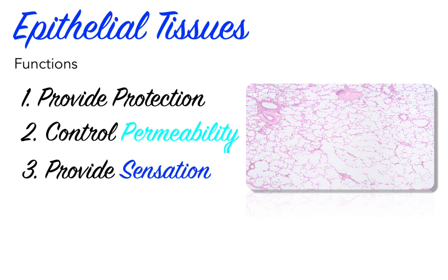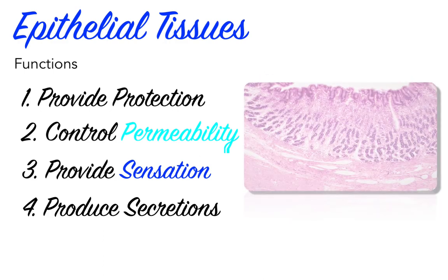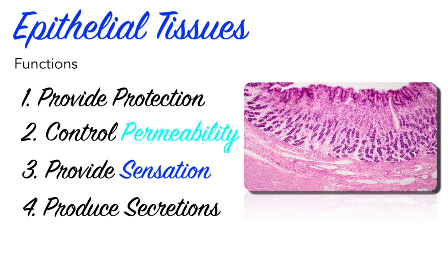Third, epithelial tissues provide sensation. Not only do some nerve endings penetrate into epithelial tissues, but epithelial tissue also contains specialized cells that can detect changes in the environment and relay information to the nervous system. For example, touch receptors in the deepest layers of the skin's epithelium respond to touch by stimulating neighboring sensory nerves. Fourth, epithelial tissues produce specialized secretions. We call epithelial cells that produce secretions glandular cells. Sometimes these are individual cells scattered among other cell types. We will explore the classifications of glandular epithelia in our discussions of the integumentary and endocrine systems.